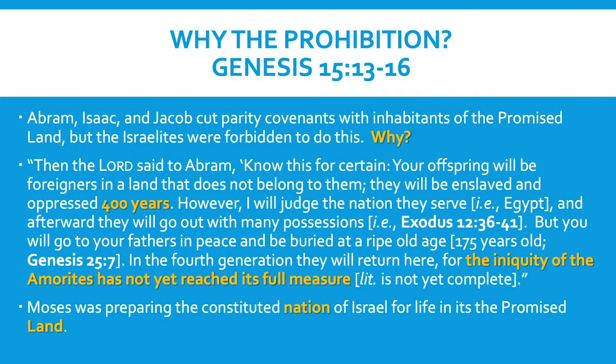The Mosaic Covenant was more of the constitution for the nation of Israel as it was leaving Egypt and was being constituted as the people of God. But why the prohibition? Why would God have allowed Abraham, Isaac, and Jacob to make parity treaties with their neighbors, but then prohibited the children of Israel from making similar arrangements with the inhabitants of the Promised Land? The reason is because, as God foretold to Abraham in Genesis chapter 15, when Israel would enter into the Promised Land some 400 years after the time of Abraham, the sin of the Canaanites, the sin of the Amorites, would reach its full measure, and in just punishment God would expel and destroy the peoples of Canaan.